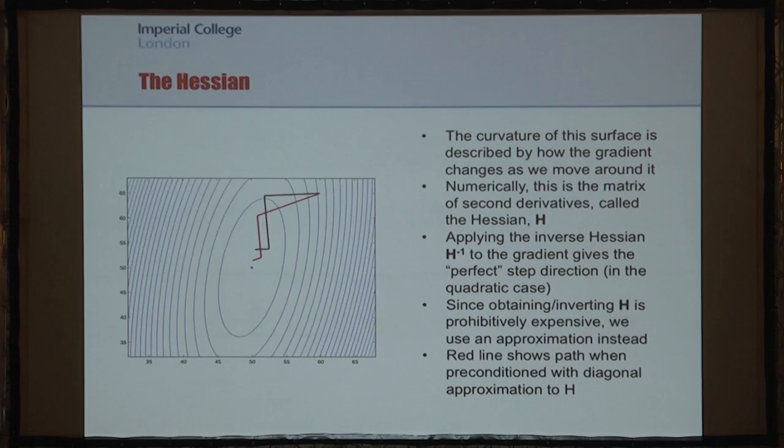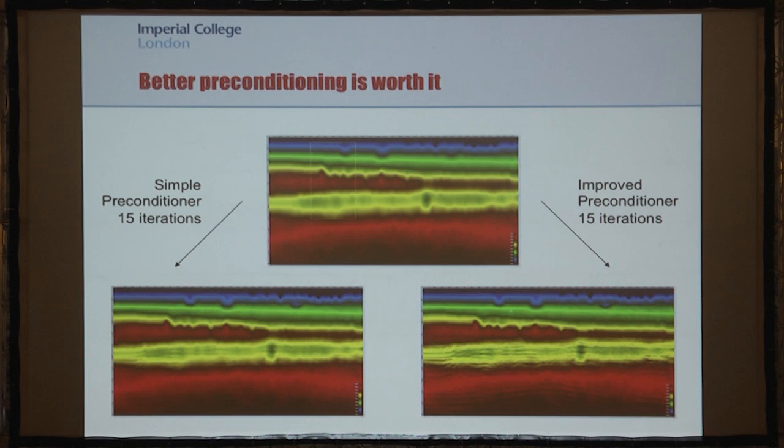A popular approximation is to simply obtain the diagonal of the Hessian. The red line shows the path taken when we precondition this two-parameter problem with a diagonal Hessian. To motivate you through the maths coming next, we'll show the result I'll present later: a starting model for the Chevron blind test that Dimitri presented this morning, with a naively constructed preconditioner, and then with a preconditioner including receiver position information.